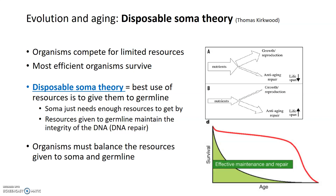It's important that an organism balances the resources given to the germline and to the soma. You can't give all resources to the germline or there won't be enough for the body to survive long enough to grow and reproduce. But you can't give all resources to the soma either, or you risk passing on potentially damaged or mutated DNA to the next generation. The disposable soma theory argues that the organism with the perfect balance between resources given to the soma and resources given to the germline will be the most successful organism.